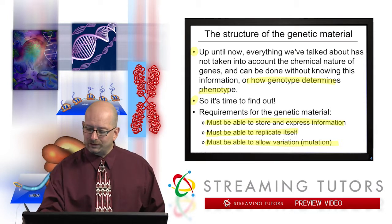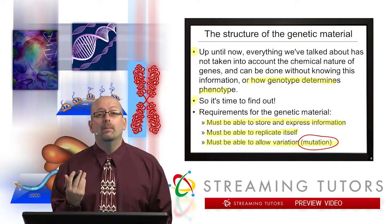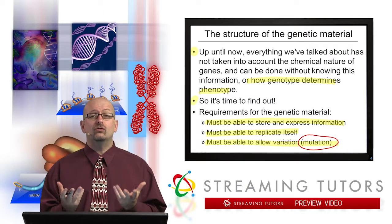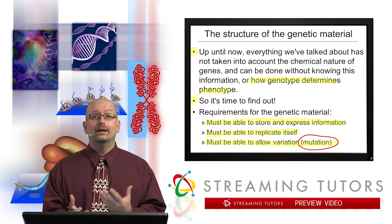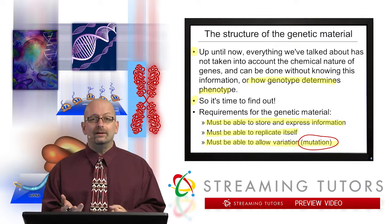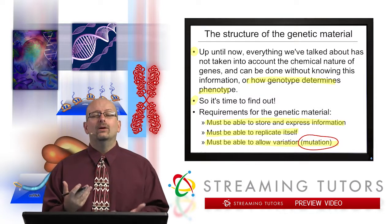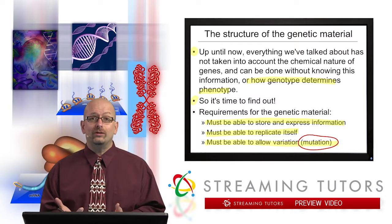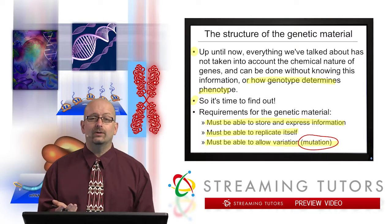There has to be a ridiculous capacity for differences in the information stored. Mutation just means a change, and it was known even before DNA was understood that changes could occur. The white-eyed allele in the fruit fly was a mutation of the normal wild-type red-eyed allele. So we have to choose a molecule that has a capacity for this type of change.